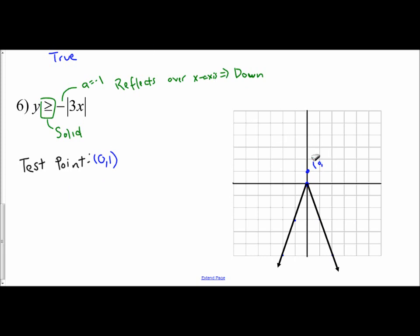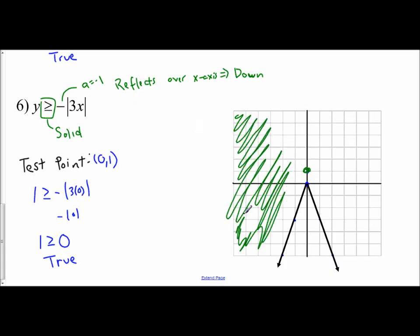And so now what I do is I take my 0, 1. I plug it in. Your y is 1. Is 1 greater than or equal to negative absolute value of 3 times 0? Well, absolute value of 3 times 0 is 0. Absolute value of 0 is 0. And you can't take the negative of 0. So is 1 greater than or equal to 0? Now, that is a true statement. And so then we're going to shade in the region created or the region that contains this point. And so that's everything outside of the V shape. So it's this entire region.